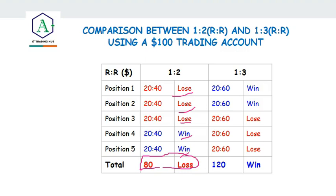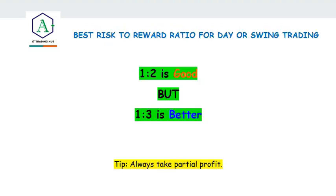But if you are using a 1:3 risk-to-reward ratio — risking $20 to earn $60 — and you take five trades where three hit your stop loss and you only win two trades, you will be making $120. You have recovered your losses and still made a profit. That is why I recommend using a 1:3 risk-to-reward ratio. One-to-two is good, but 1:3 is better. If you are a day trader or a swing trader, start using a 1:3 risk-to-reward ratio.